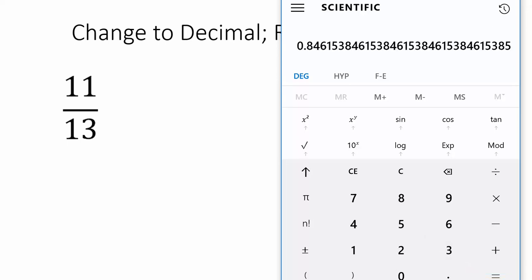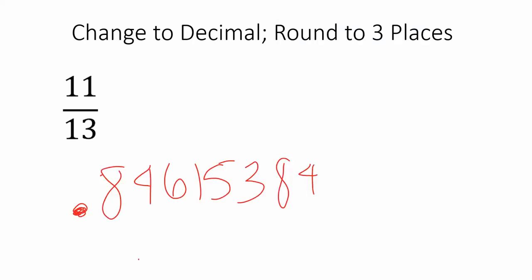Again, your answer is quite long. Start by writing down a good chunk of it so we can round. Okay, I wrote down part of the decimal. I know I only want to go to three places. So I'm going to find my thousandth place.